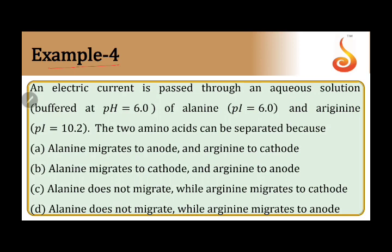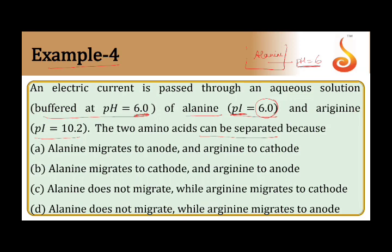Example 4: an electric current is passed through an aqueous solution buffered at pH 6 of alanine (pI = 6) and arginine (pI = 10). The two amino acids can be separated because when electric current is passed at pH 6, alanine's isoelectric pH (pI) is also 6. So any alanine present at pH 6 will neither move towards the cathode nor the anode, because it exists as a perfect zwitterion at pH 6.